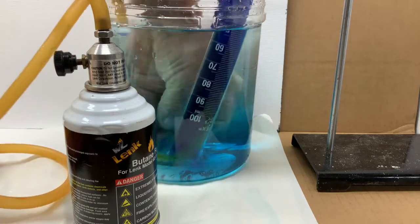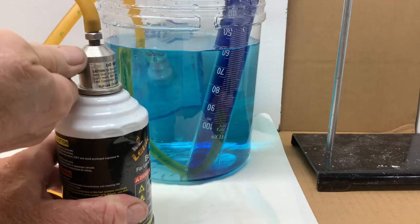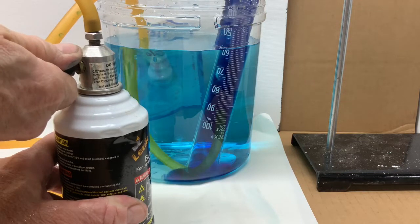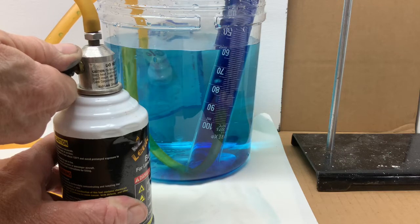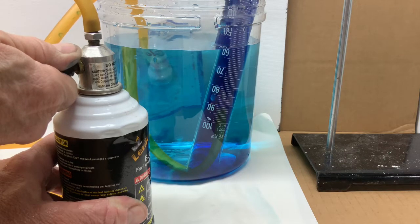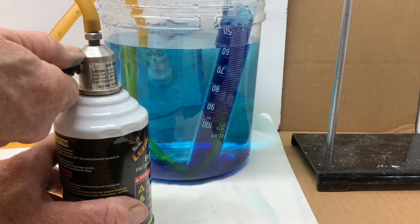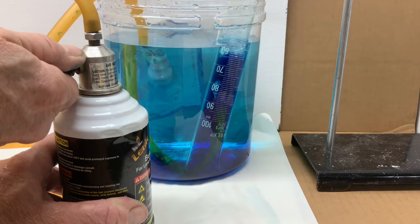the bottom of the grad cylinder, the inverted grad cylinder, and start adding the butane gas. Water is pushed out the bottom of the cylinder as the gas displaces the water in the cylinder.